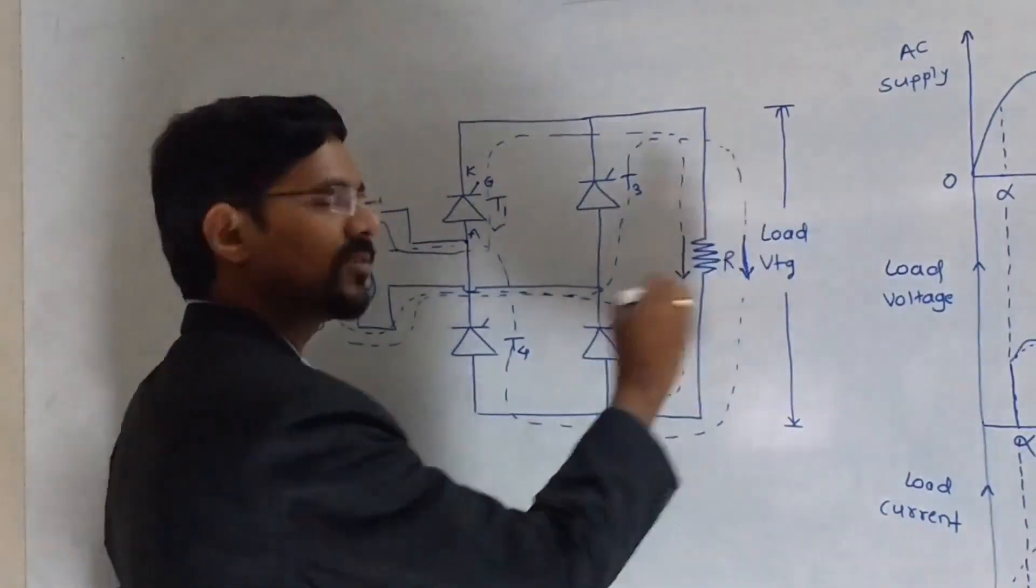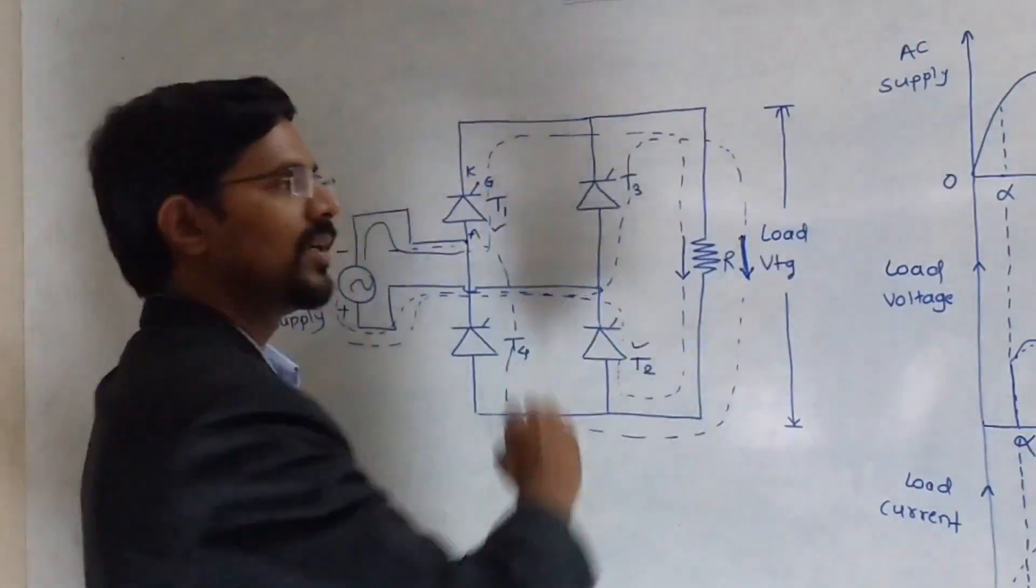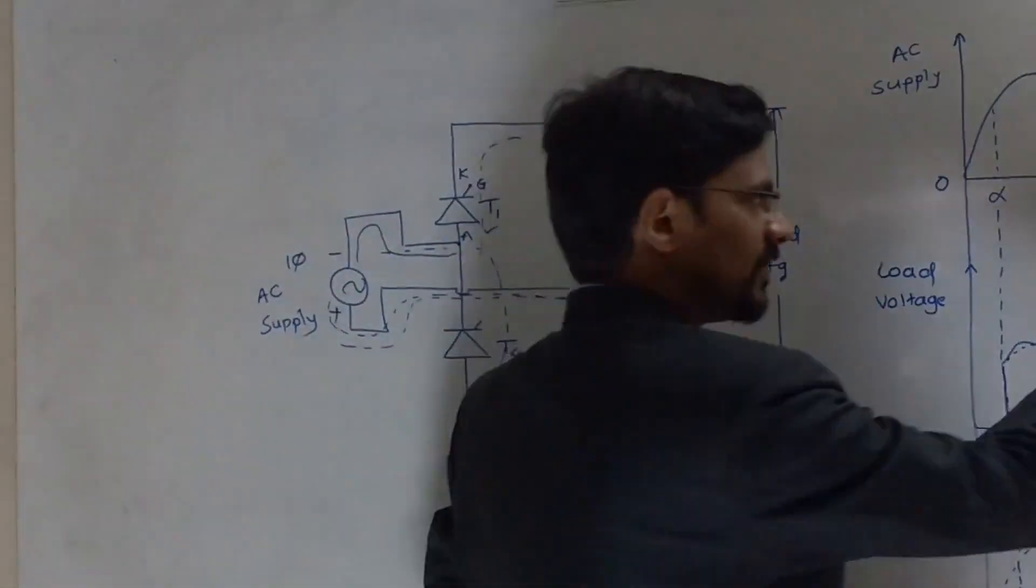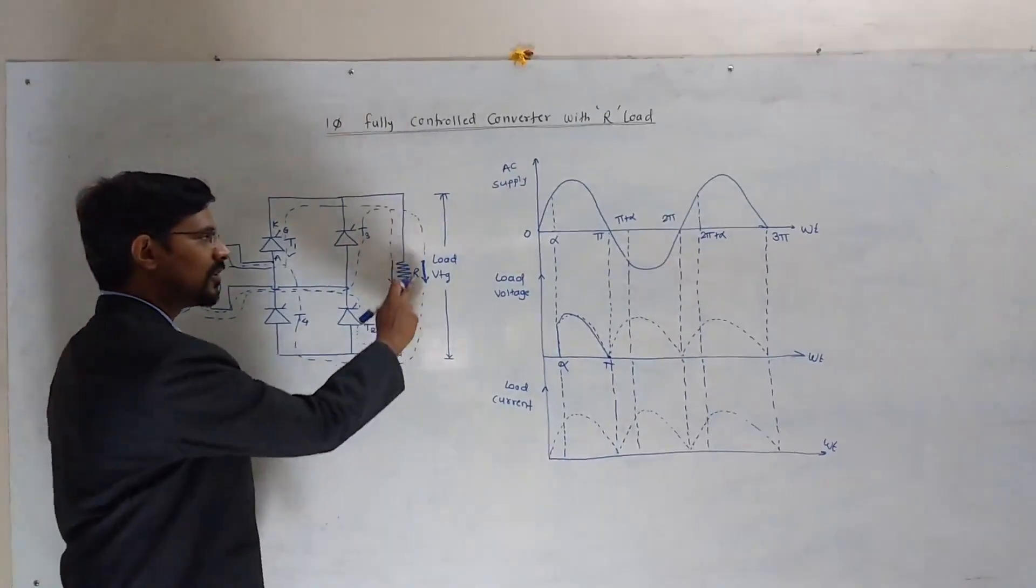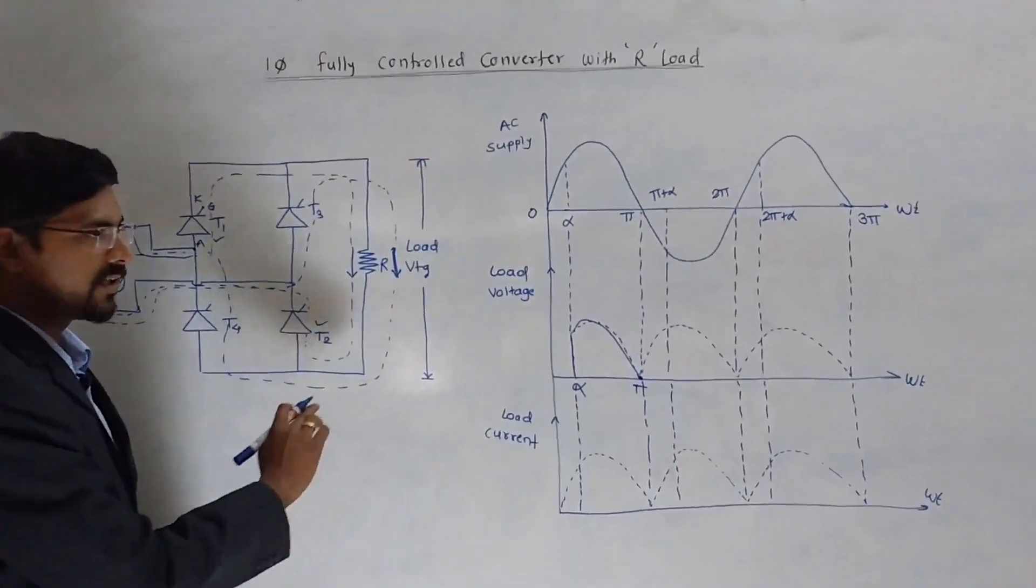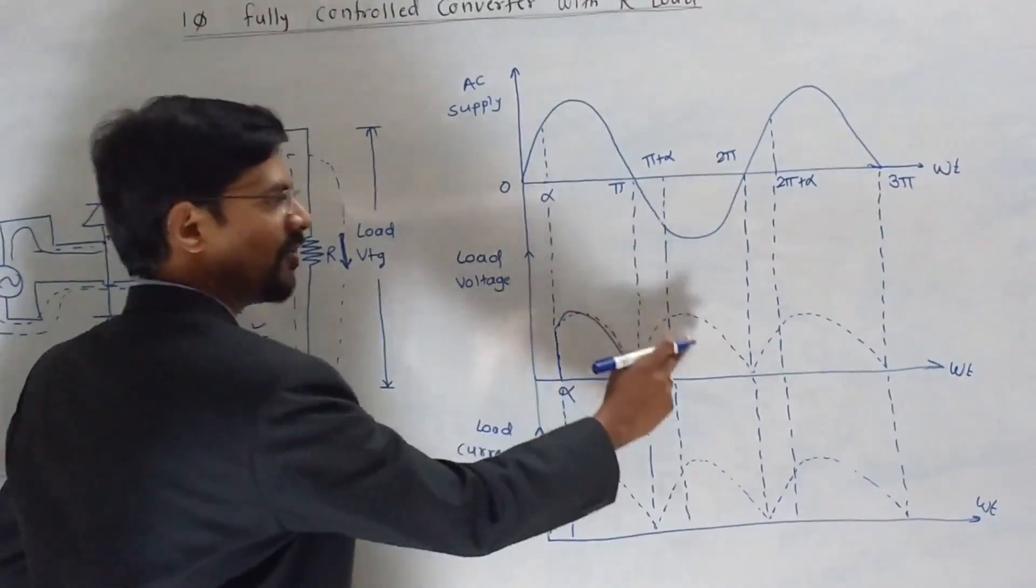If you observe the waveform, you have seen the current flowing through the load. In both cases, current direction is same. Therefore, keep in note, for positive half cycle and for negative half cycle, current flowing through the load is in the same direction. Therefore, you will get the same waveform for positive half cycle and for negative half cycle.